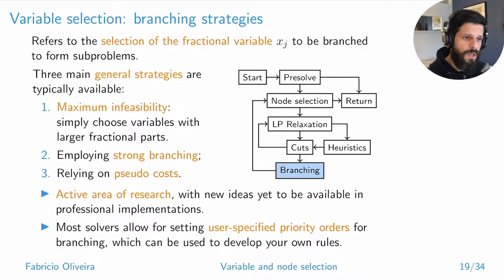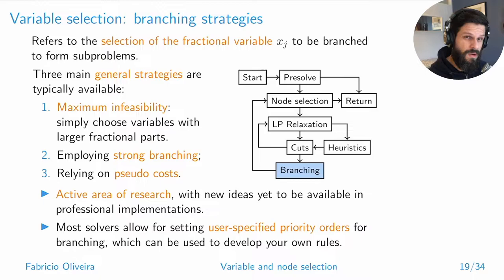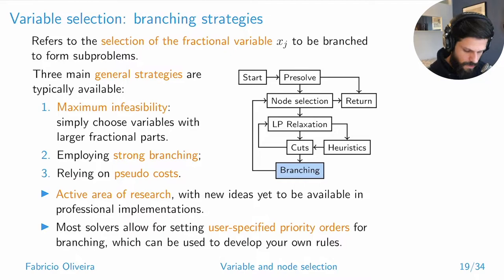Most solvers also allow user-specified priority. If you have a variable that, once fixed to a value, makes the problem easier to solve — location-allocation problems are a typical example — you can assign that variable a higher priority when selecting it for branching. This can be done in a very problem-specific way.